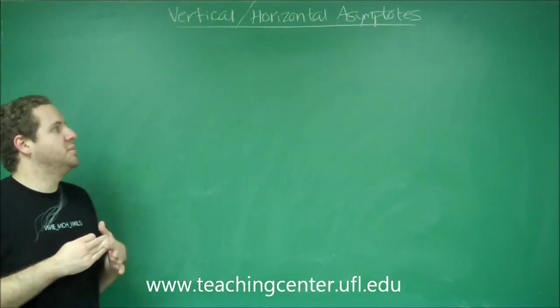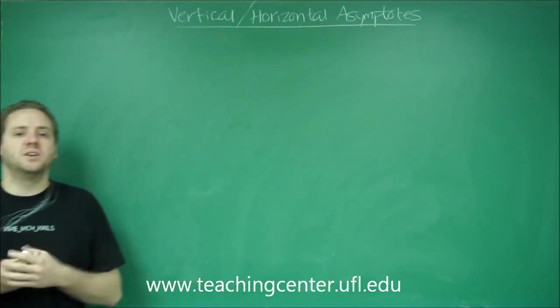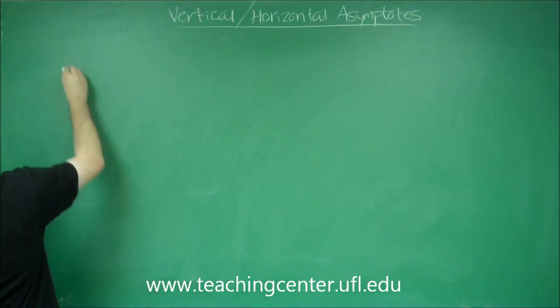The two main types of asymptotes you're going to be working with in this class are vertical and horizontal asymptotes. So what I'm going to tell you here is how you can figure those out algebraically. So let's start with vertical asymptotes.